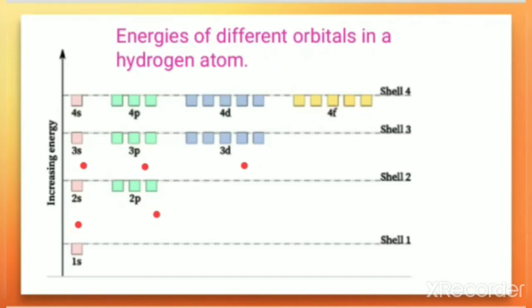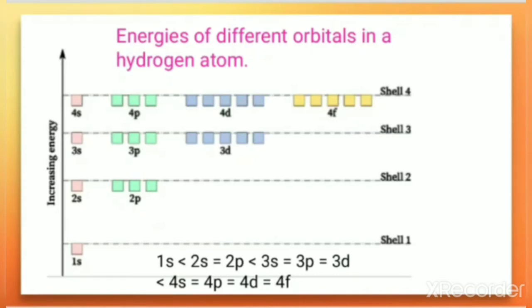All orbitals of a particular principal quantum number have the same energy. For n = 4, the energies of 4s, 4p, 4d, and 4f are all the same. So for hydrogen, when arranged in increasing order of energy: 1s has minimum energy, then 2s = 2p, then 3s = 3p = 3d, then 4s = 4p = 4d = 4f.